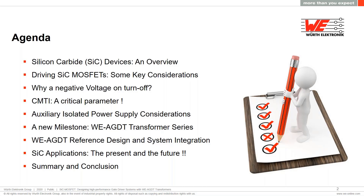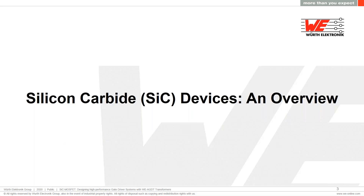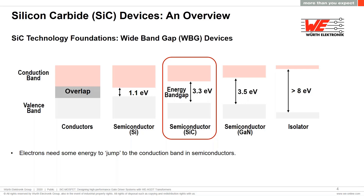Let's get started with a quick overview of silicon carbide technology. Silicon carbide, like gallium nitride, is a wide bandgap material. Going a bit into atomic theory, the energy band gap is the energy which needs to be provided to an electron in the valence band so that it can jump to the conduction band, reducing the resistivity of the material.